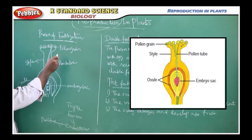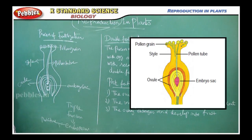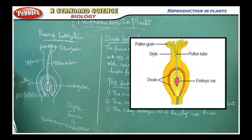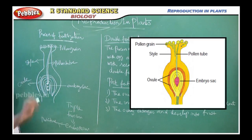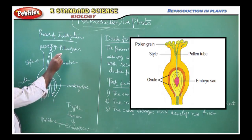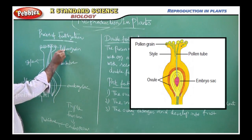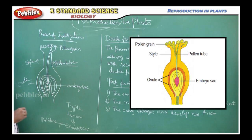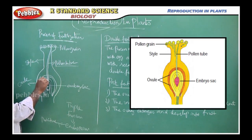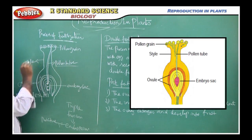Once the pollen grain is transferred to the female part, the fertilization process starts. Fertilization means the fusion of male gamete and female gamete. Here the pollen grain extends its pollen tube. In the pollen tube, it has a pollen tube nucleus as well as the sperm.